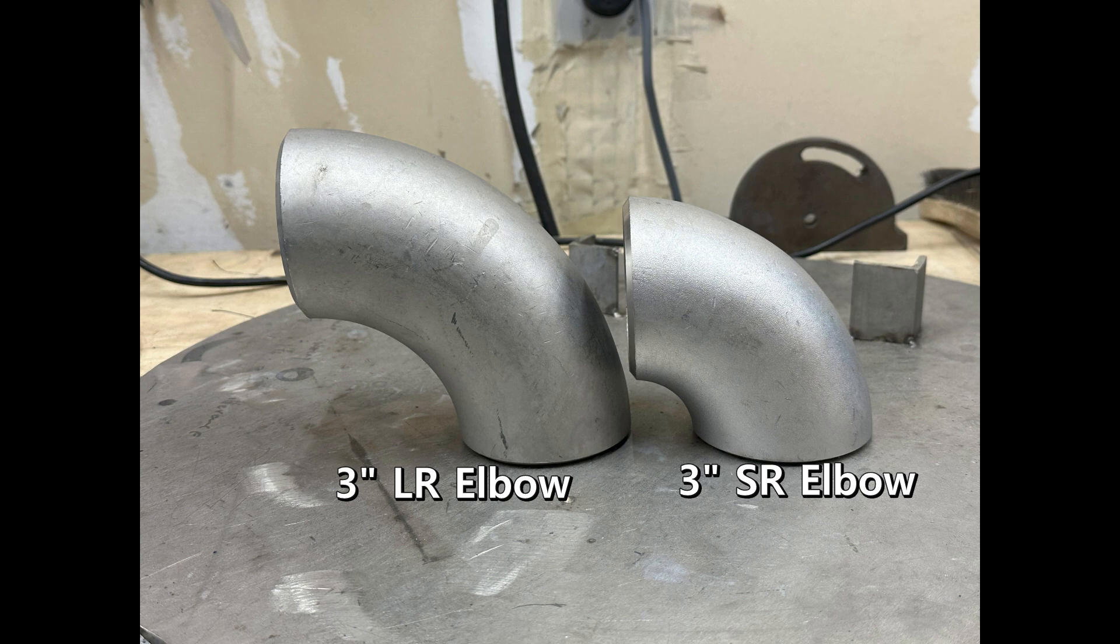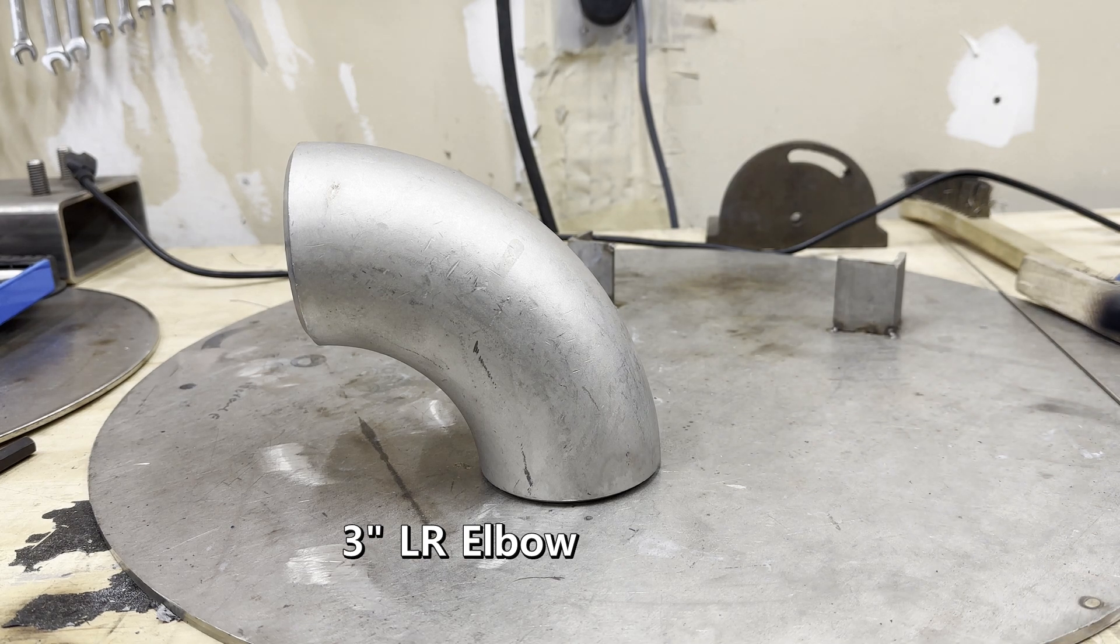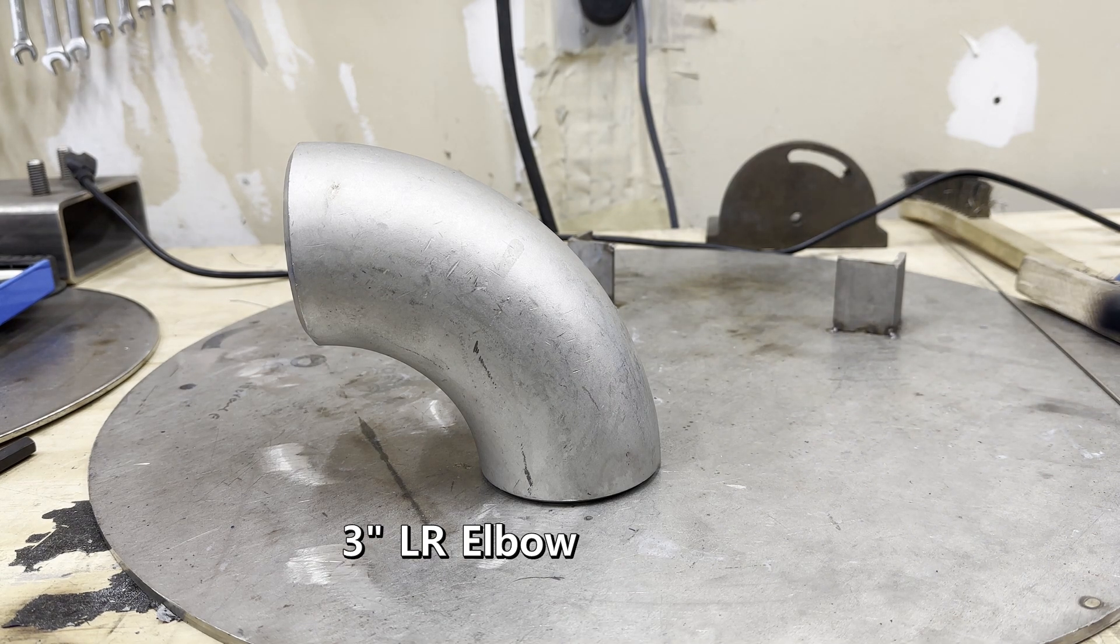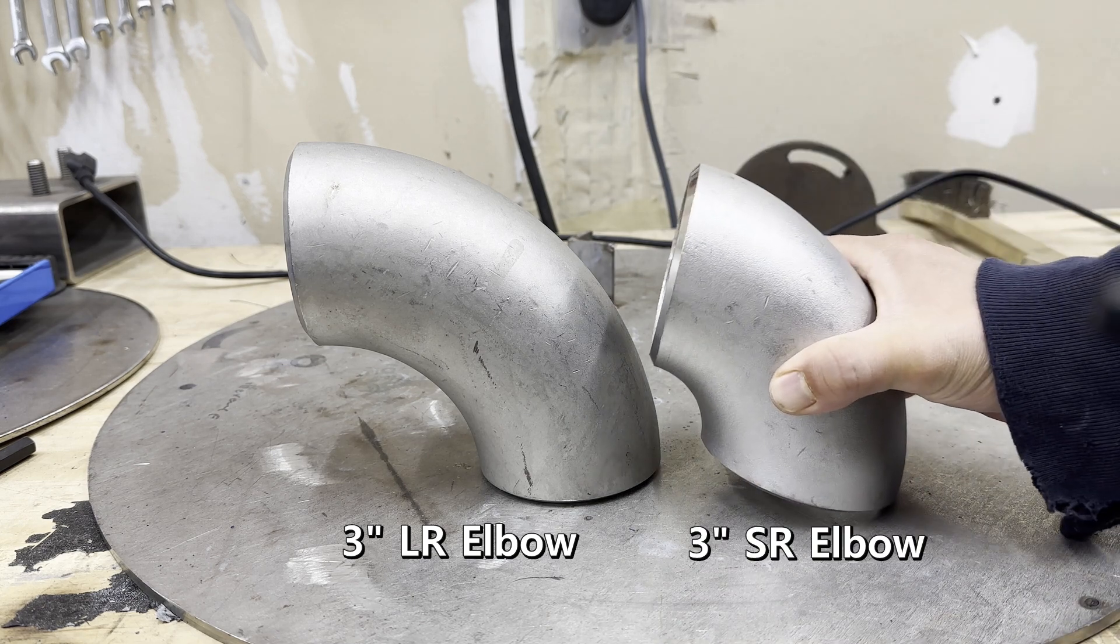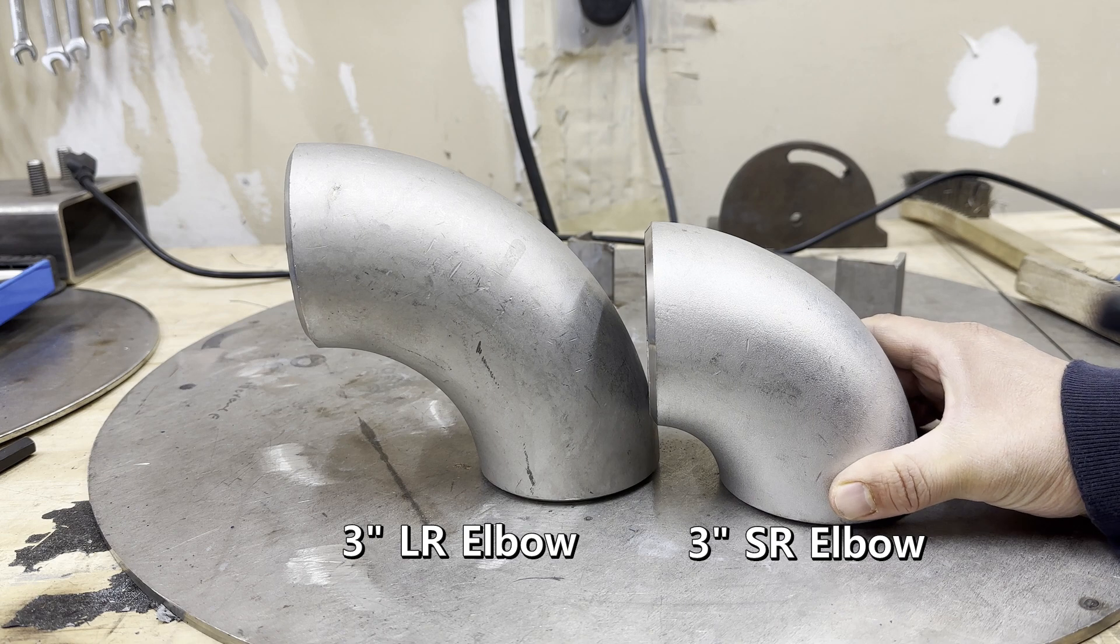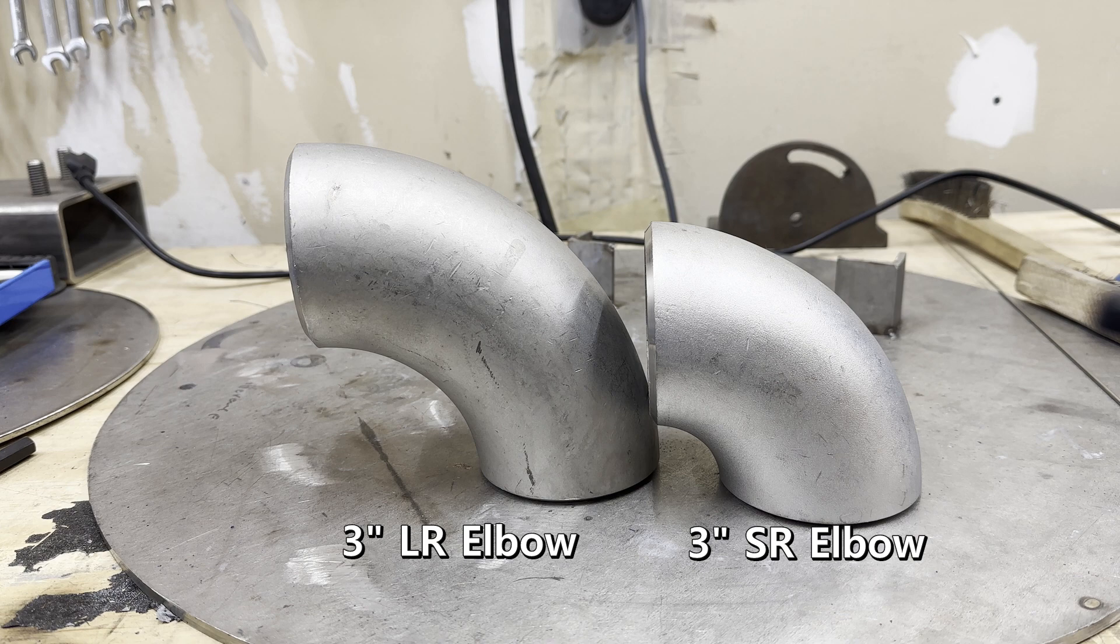It will be easier to understand if I show you the actual 3-inch elbow. First is the long radius elbow. The next is the short radius elbow. As you can see, they are the same 3-inch elbows, but there is a clear difference.